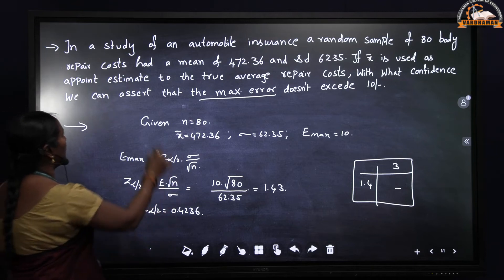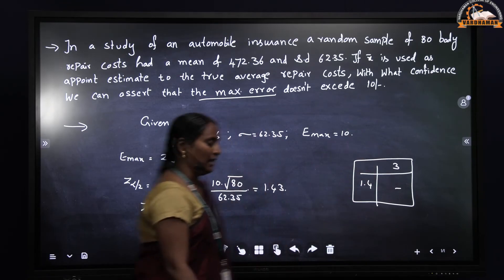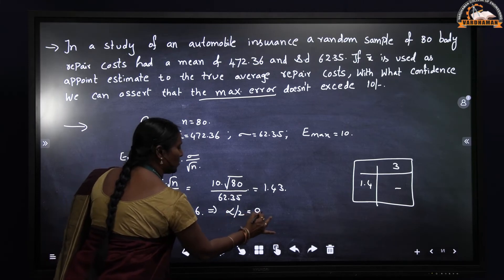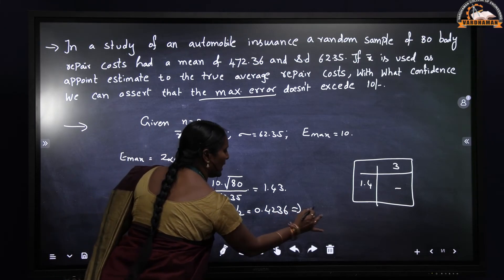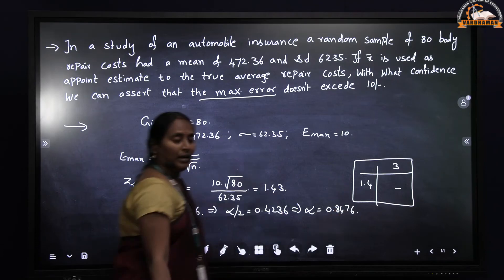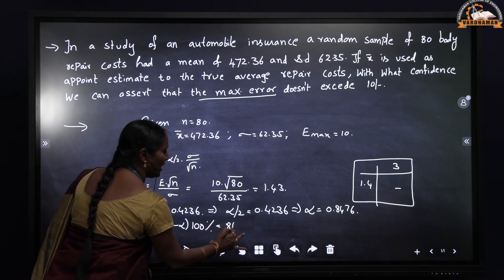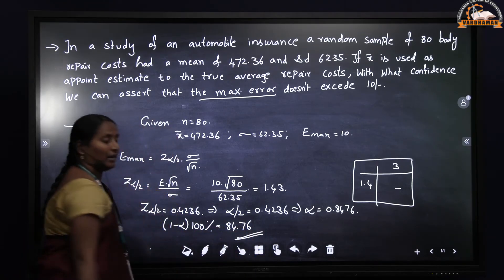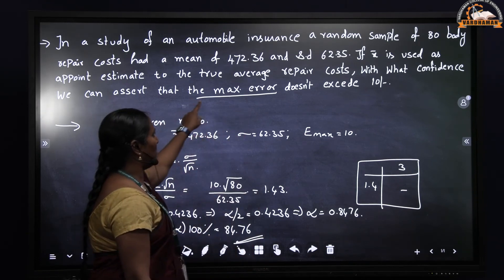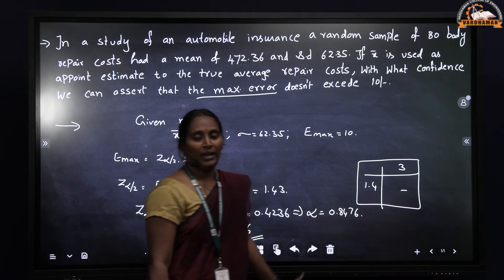So alpha/2 = 0.4236, which gives alpha = 0.8476 (since 2 * 0.4236 = 0.8472, approximately 0.8476). Therefore, the confidence level is (1 - alpha) * 100% = 84.76%. In this way, using the maximum error estimate, we find the confidence level.